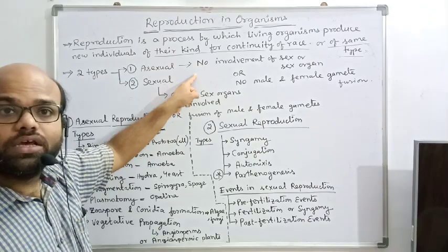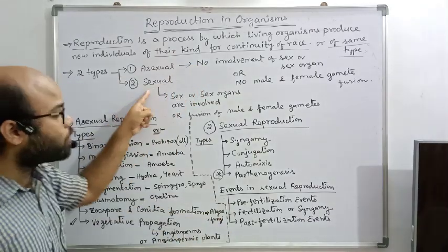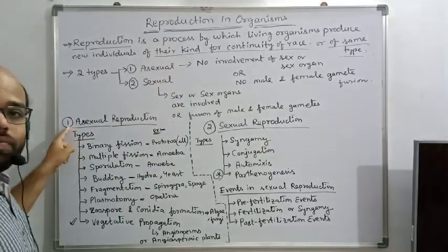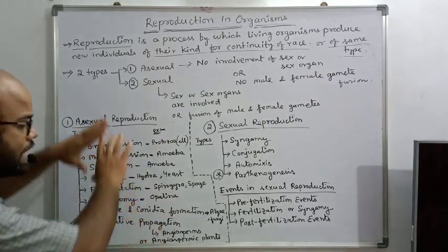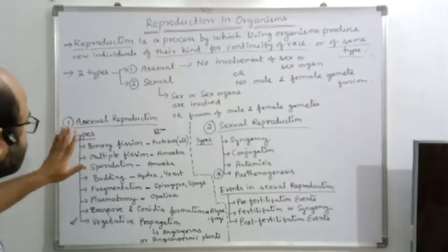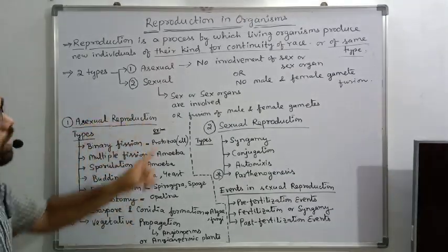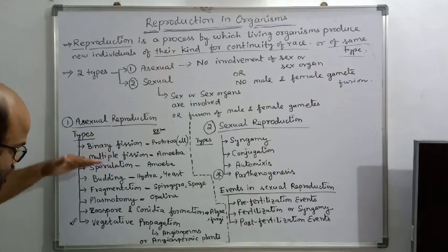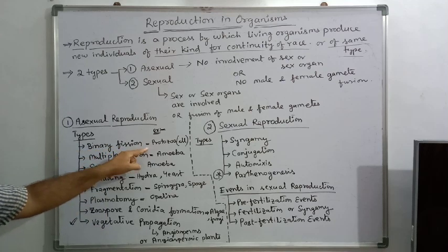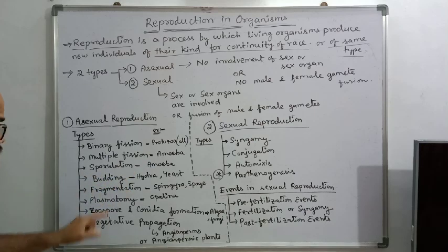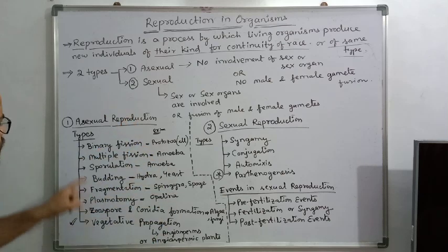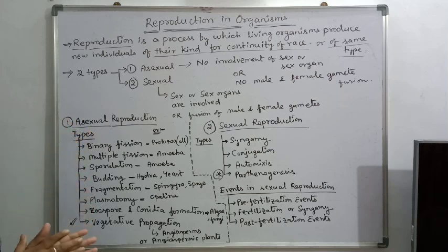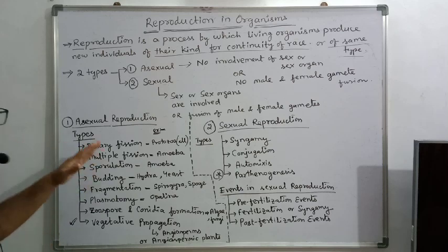Asexual reproduction is generally found in lower living organisms, but sexual reproduction is generally found in higher living organisms. Asexual reproductions are basically of these major types: binary fission, multiple fission, sporulation, budding, fragmentation, plasmotomy, geospore and conidia formation, and vegetative propagation. We have discussed some of these topics in first year; here we will discuss them in detail.